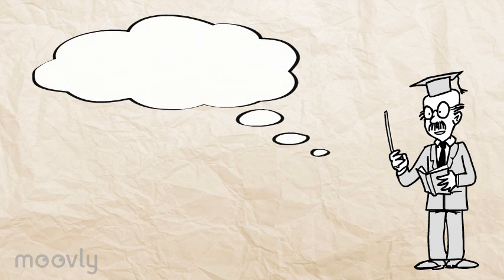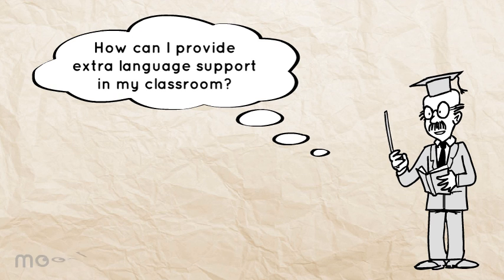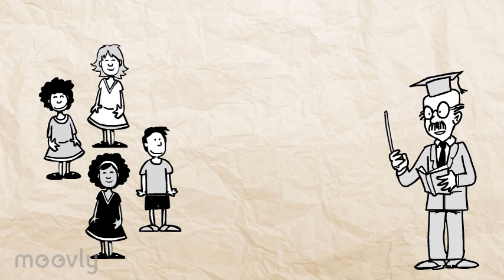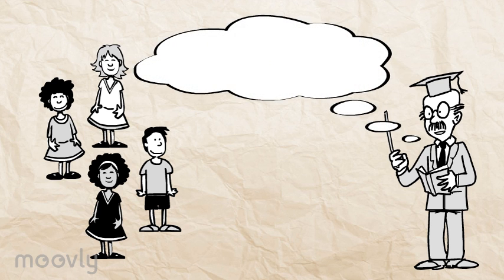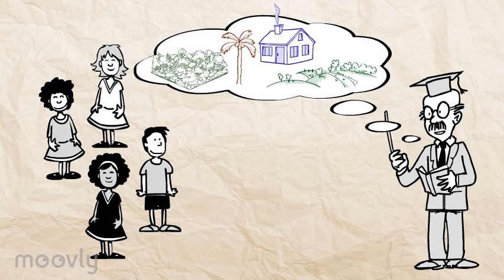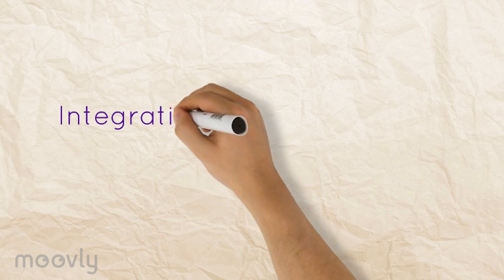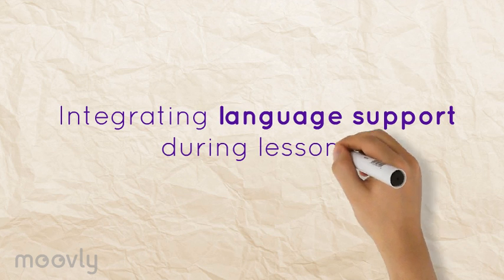As a teacher, there are a number of strategies you could use in your classroom to support students who have weaker language skills. Let's again imagine that we are in a grade 4 classroom and we are starting our science unit on habitats and communities with the class. Here are some strategies the teacher could use to integrate language support during their science lessons.